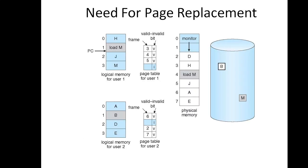We can see this in the figure: there is logical memory for user 1 and user 2 with their respective page tables, and physical memory. Two processes have used all pages in main memory, so there is no free frame in physical memory.